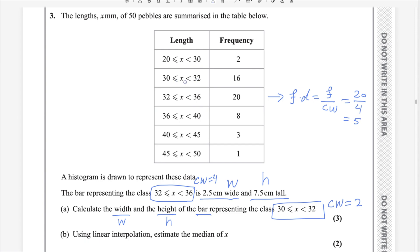You also need to find the frequency density of the class 30 to 32. For this class, frequency density will be 16 divided by 2, which equals 8.